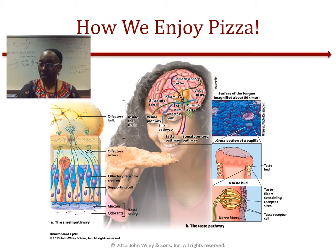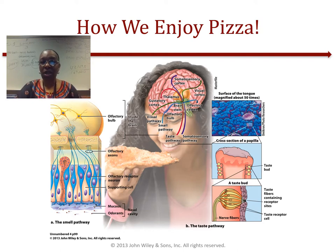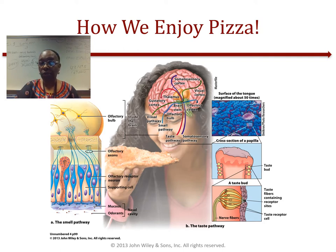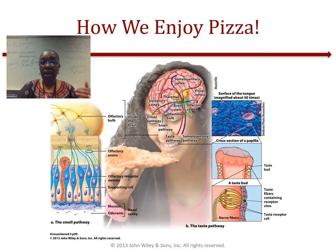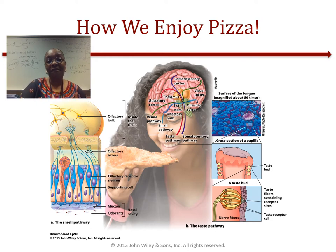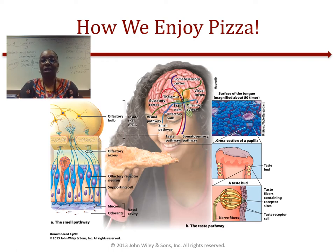Think about pizza. When we eat it, taste receptor cells and sensory cells that respond to touch and temperature are activated on our tongues. Information about taste, smell, texture, temperature, and appearance is sent to the brain, which integrates it with various association regions of the cerebral cortex. These circuits work together with stored memories about past pizza experiences to produce our perception of what that particular slice tastes like.